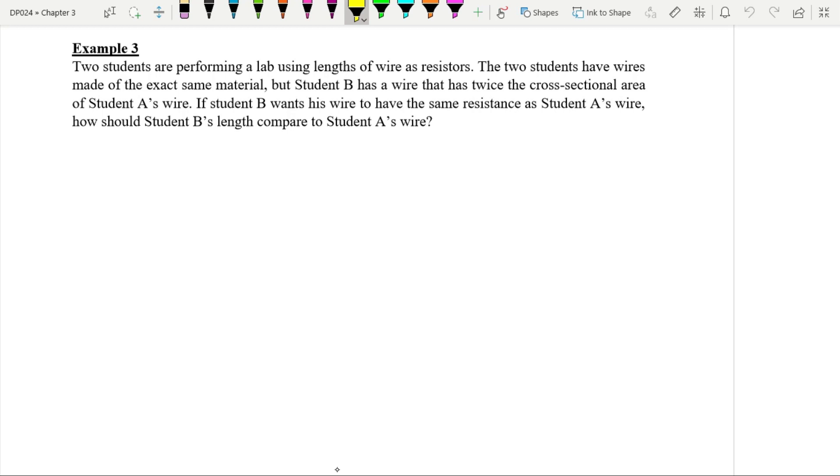Two students are performing a lab using length of wire as resistors. The two students have wires made of the exact same material, so both wires made from the same material. Student B has a wire that has twice the cross-sectional area of student A's wire.